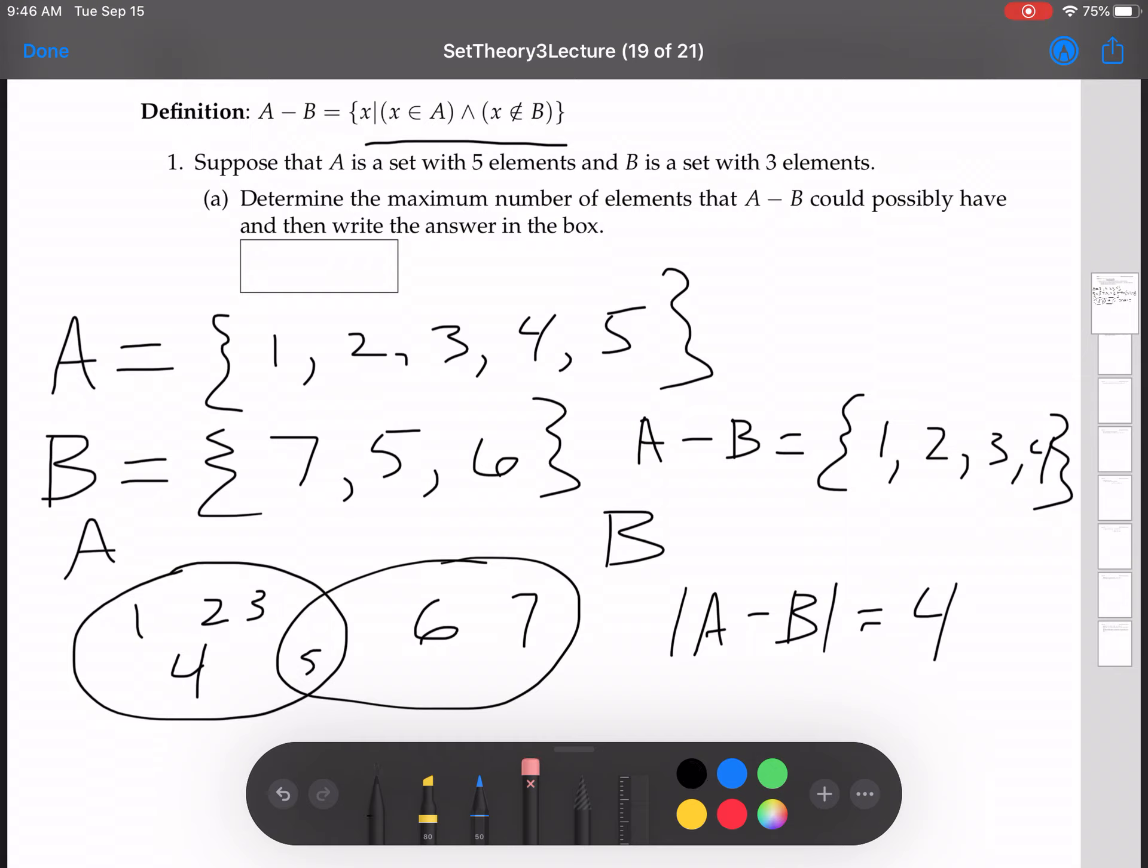Okay, now how can we - is there a way to modify that so that we get more elements in A minus B? Sure, right, let's move 5 over there. If we move 5 over there, we've got to put something else here. Let's put an 8 there. Okay, so we'll get rid of that, we'll put 8 there. Now A minus B becomes 1, 2, 3, 4, oops - 5, throw 5 in there.